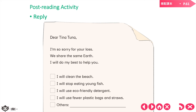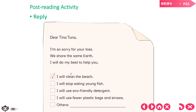我們來看我們會做些什麼。首先，I will clean the beach — 我會去淨灘。I will clean the beach so there's no trash to go back into the ocean. 再來，I will stop eating young fish — 我會停止吃年幼的小魚。